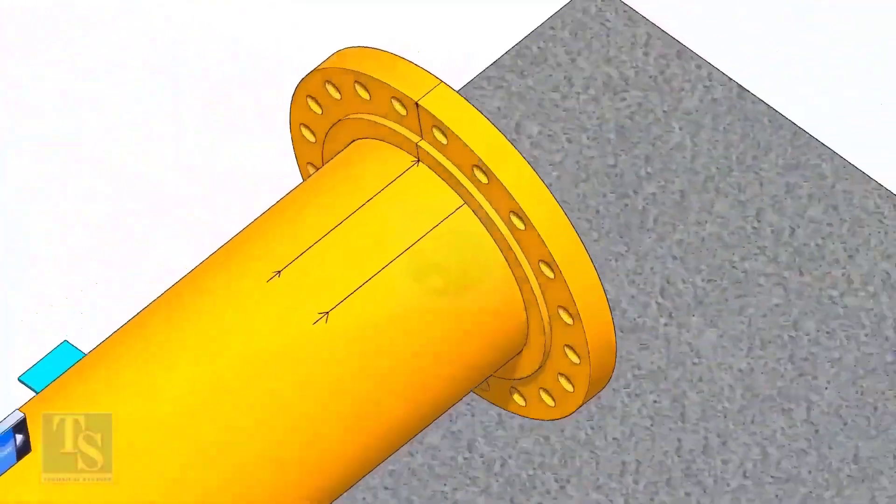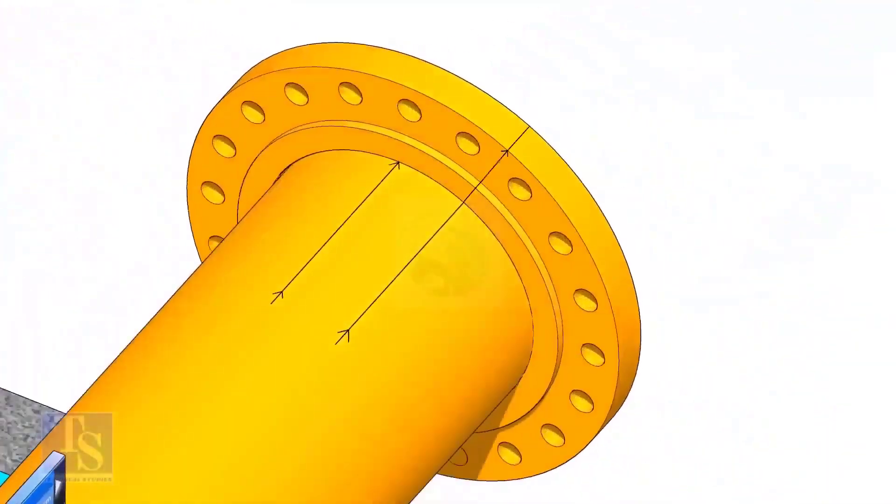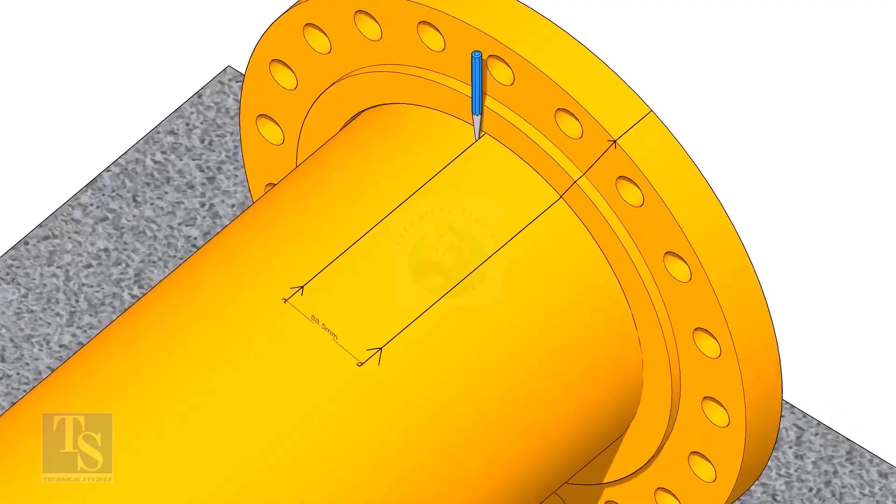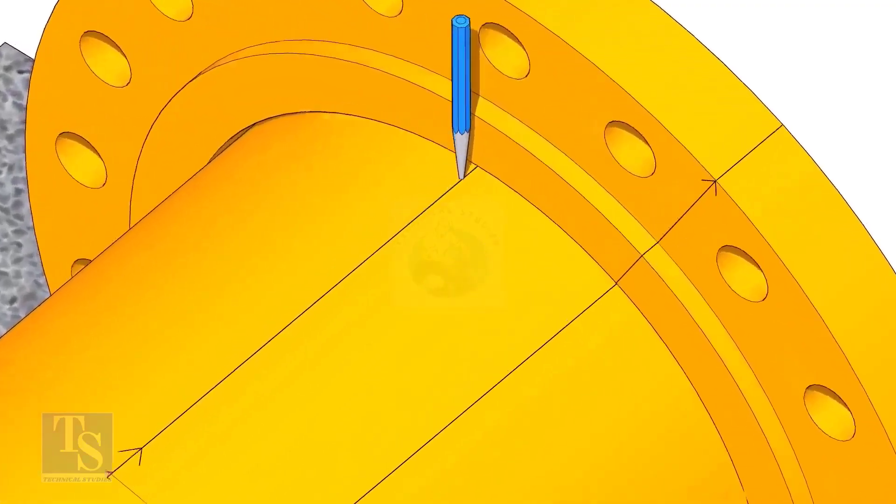Put the flange on the pipe. Rotate the flange until the center line on the flange and the 25 degree line on the pipe comes in a line. Don't forget to punch mark the center lines.